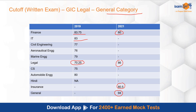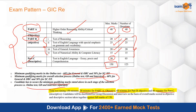Aur sabse badi baat — aap logon ko jis cheez se dar lagta hai, which is quants. Aap chahein to numerical ability ko skip bhi kar sakte hain. Yahaan par aapke paas sirf 15 questions hi hain — aap in 15 marks ka risk lenge and spend more time understanding reasoning. It is entirely your decision. Sectional cutoff nahi hai. But agar aap saath hi NICL ka exam bhi de rahe hain, to us mein sectional cutoff hai — don't skip quant then.